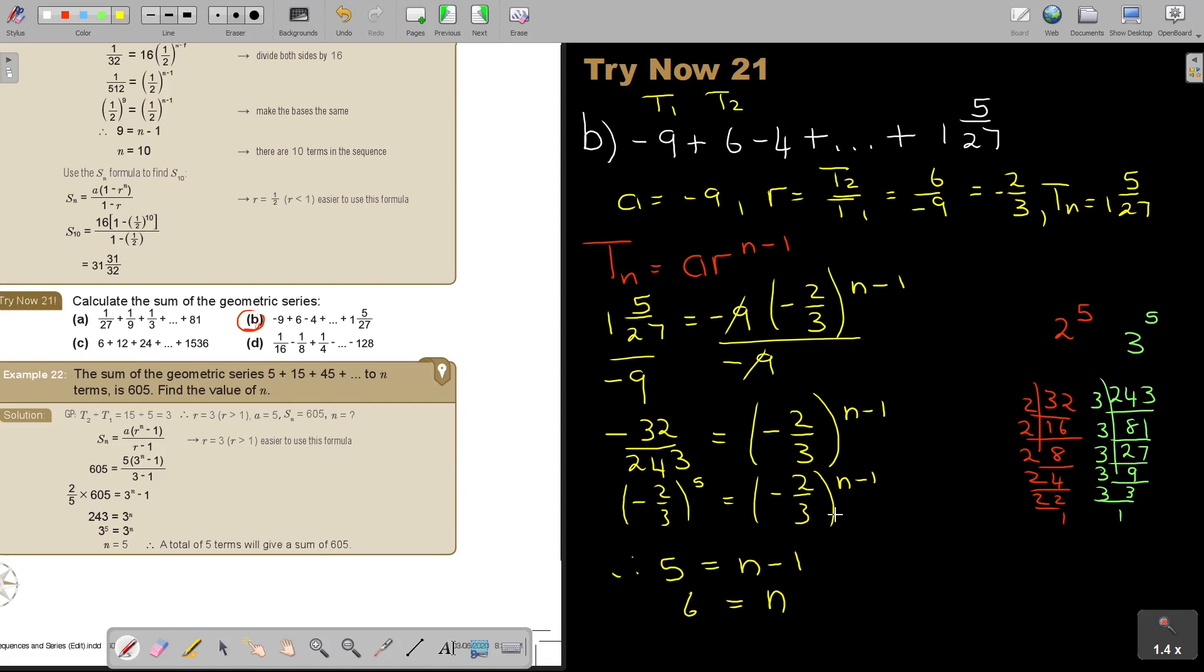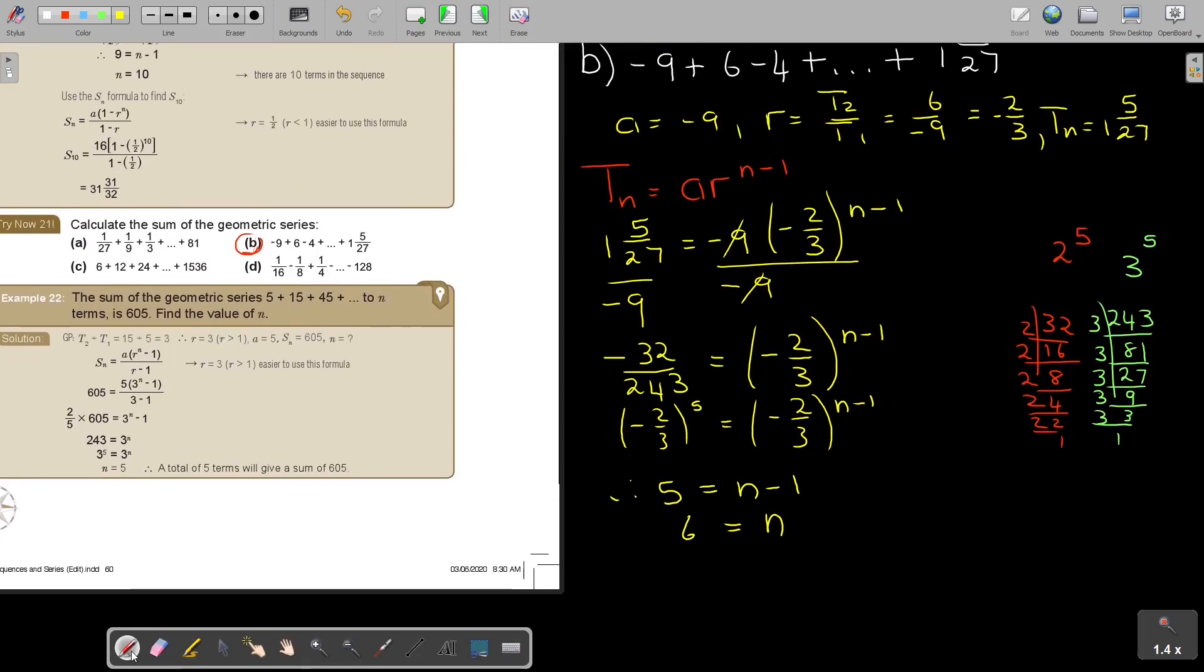So basically, now I'm asking you to find S6. So, let's take another color. S6. Now, what formula, let's just write the formula down. I'm going to use this one. So, S6 is equal to A times 1 minus R^6 over 1 minus R. Let's just start substituting.